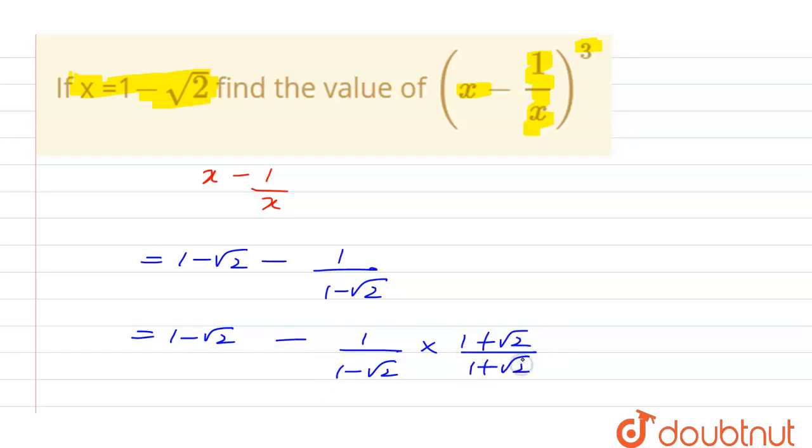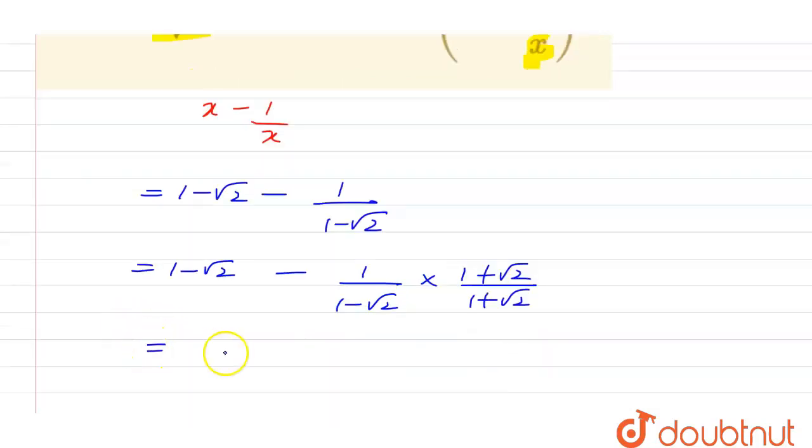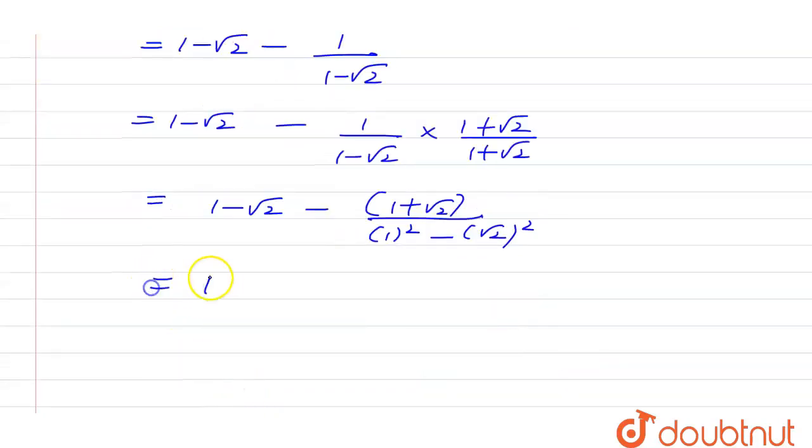So we will get 1 minus root of 2 divided by, here we can apply the formula of a square minus b square. So we will get 1 minus root of 2 minus of 1 plus root of 2 divided by 1 minus 2. So this is equal to minus of 1.